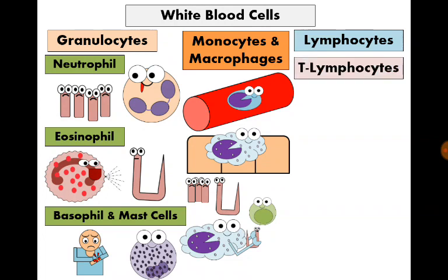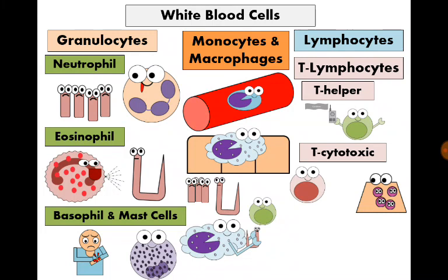We have T-lymphocytes and B-lymphocytes. T-lymphocytes are of three types. First, T-helper cells, whose main function is producing cytokines — messengers that regulate the actions of all immune cells. Second, T-cytotoxic cells, whose main function is killing abnormal cells — either tumor cells or virus-infected cells. Each T-cytotoxic cell can only identify and kill one specific type of abnormal cell.